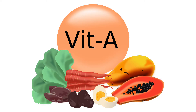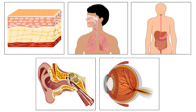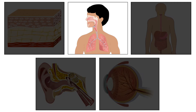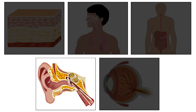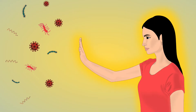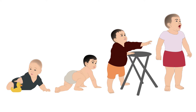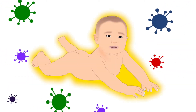Vitamin A has other roles in the body too. It maintains the strength and function of all tissues and organs such as the skin, lining of the respiratory tract, gut, inner ear, and eye. Maintaining a healthy immune system is another key role. Vitamin A is crucial for newborn health as well, helping babies in development and protecting them from infections.